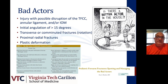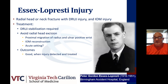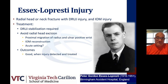The Essex-Lopresti injury was described by Peter Gordon Essex-Lopresti from the Birmingham Accident Hospital in England, where he saw military recruits with radial head or neck fractures with disruption of the DRUJ and the interosseous membrane. Treatment is to address the DRUJ by stabilizing it, avoiding radial head excision, because if not, you'll have proximal migration of the radius. Consider interosseous membrane reconstruction in the acute setting, more likely with a tightrope. In the chronic setting, we tend to reconstruct the central band, but results are not as predictable. Best outcomes are obtained when the injury is detected and treated early.